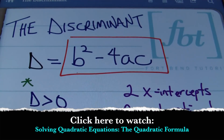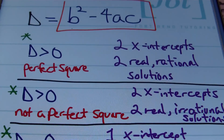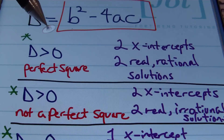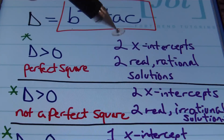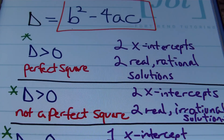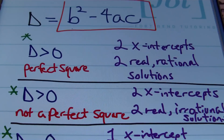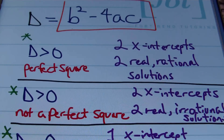When you have a discriminant value that is greater than zero — a positive number that's also a perfect square — you'll end up with two real rational solutions, in other words two x-intercepts. Perfect square examples include 1, 4, 16, 25, 49, and 81. If the discriminant is one of those perfect squares, you get two real rational solutions.